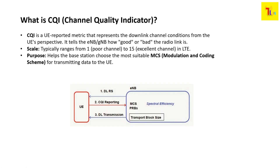What is CQI? CQI is a UE-reported measurement that represents the downlink channel conditions at the UE side. It basically tells whether the channel is good or bad, what the SINR is, and that SINR will be mapped to a particular CQI value. This tells the eNodeB how good the channel is, which is very important for scheduling better MCS values and modulation. The range of CQI values varies from 1 to 15, as per the 3GPP standard tables.